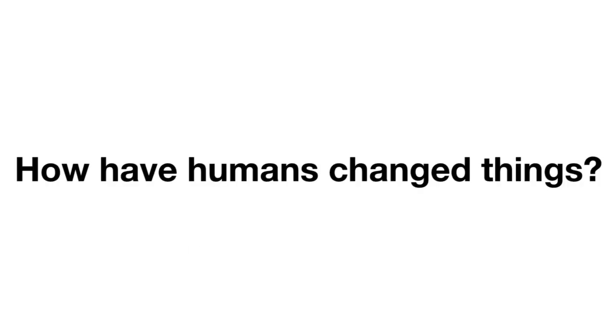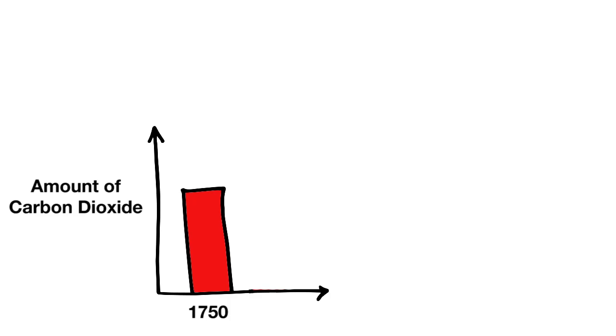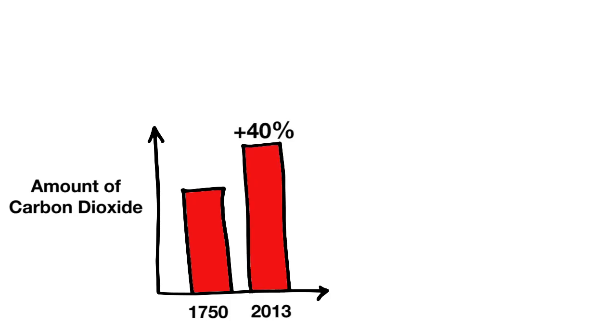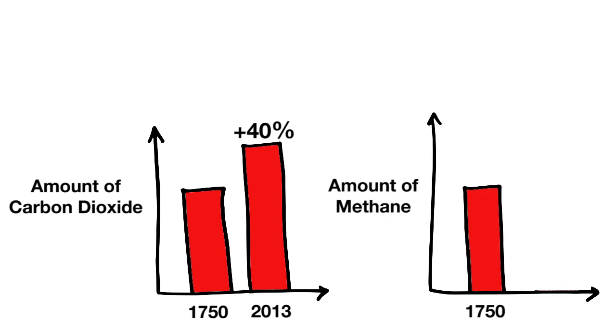So, how have humans changed things? Since the dawn of the Industrial Age around the year 1750, atmospheric carbon dioxide has increased by 40%, and methane has almost tripled.